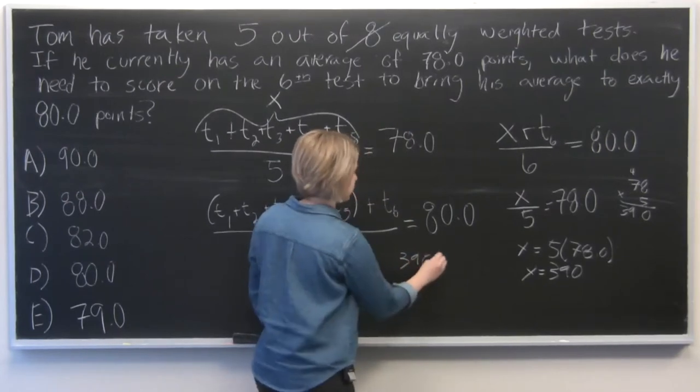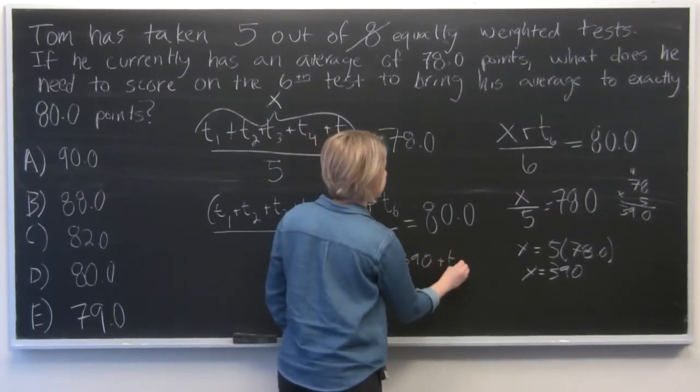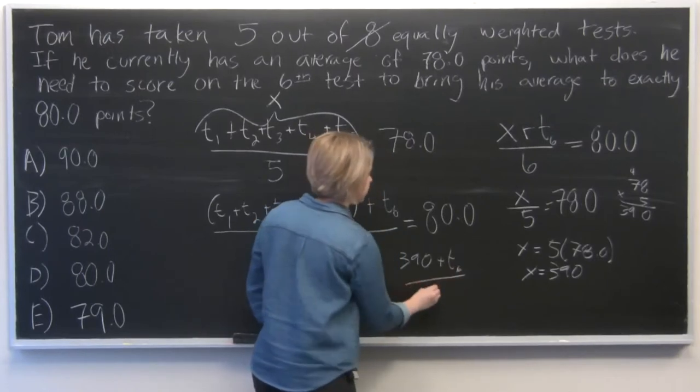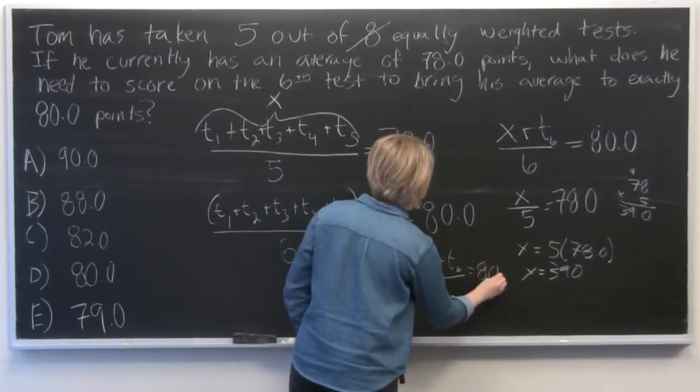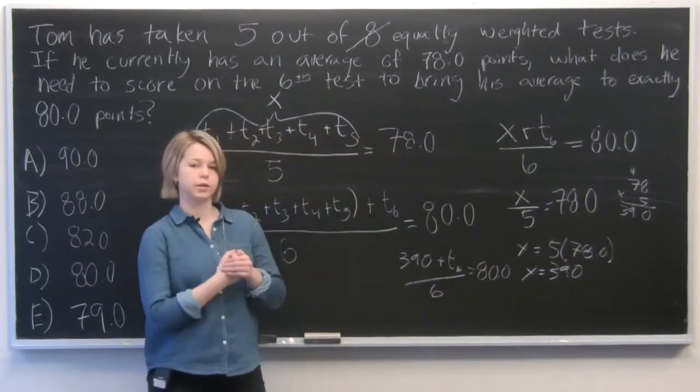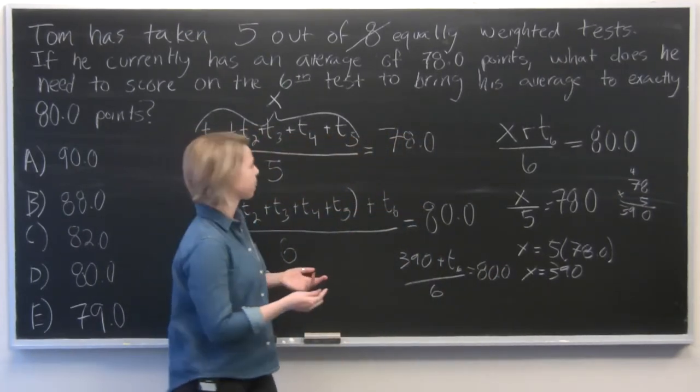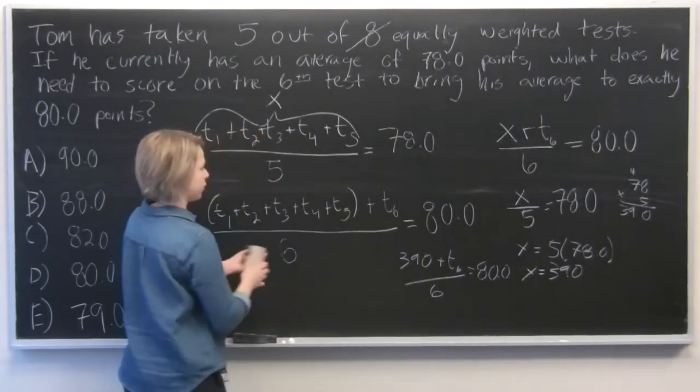So 390 plus T6 over 6 equals 80. And we will solve this algebra problem now. I'll make a little more room over here.